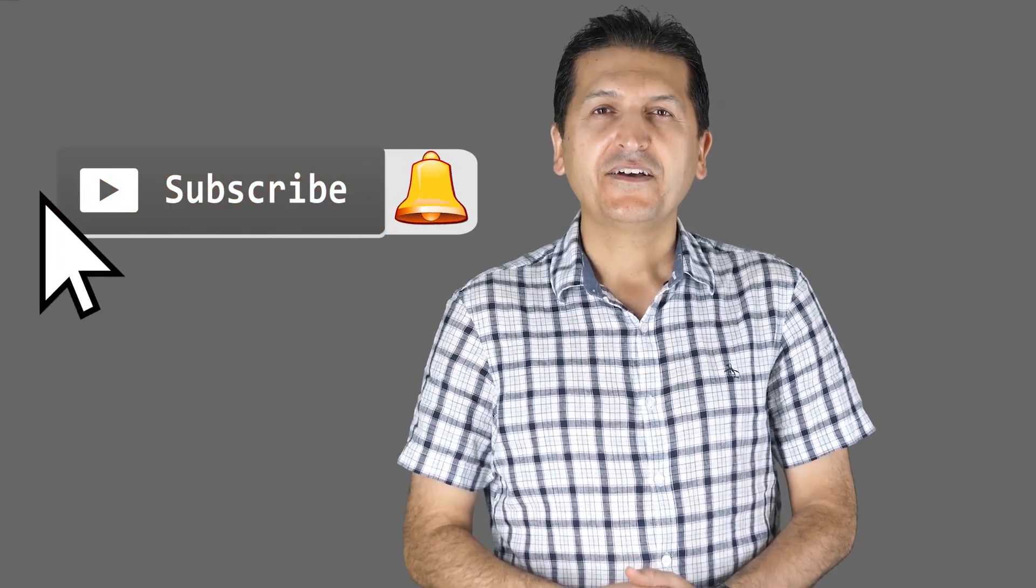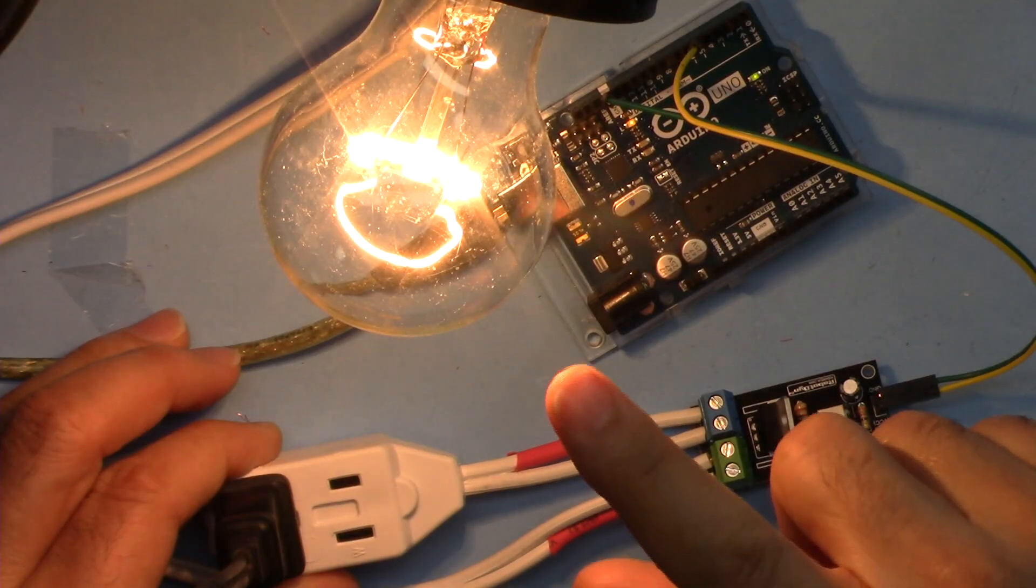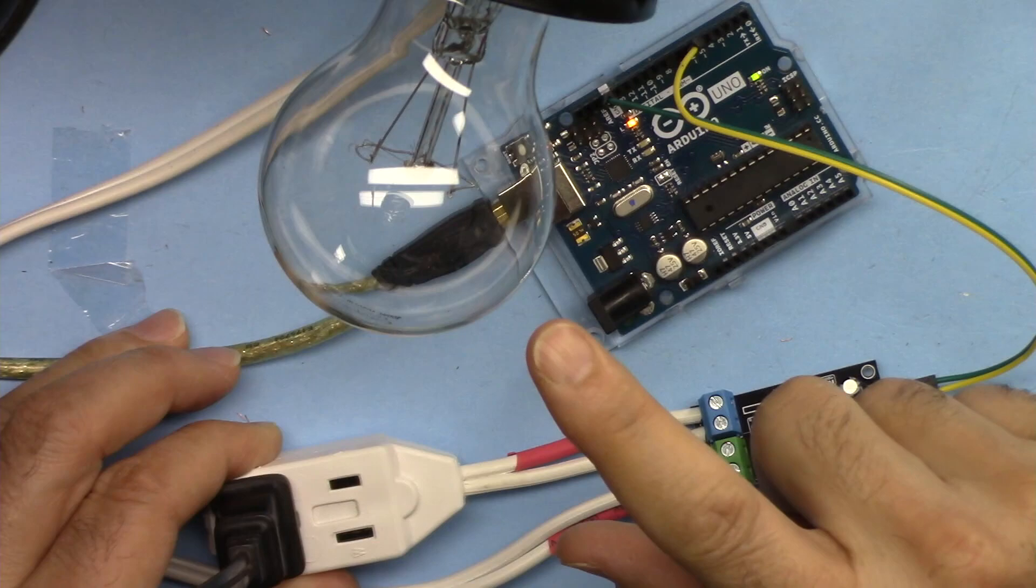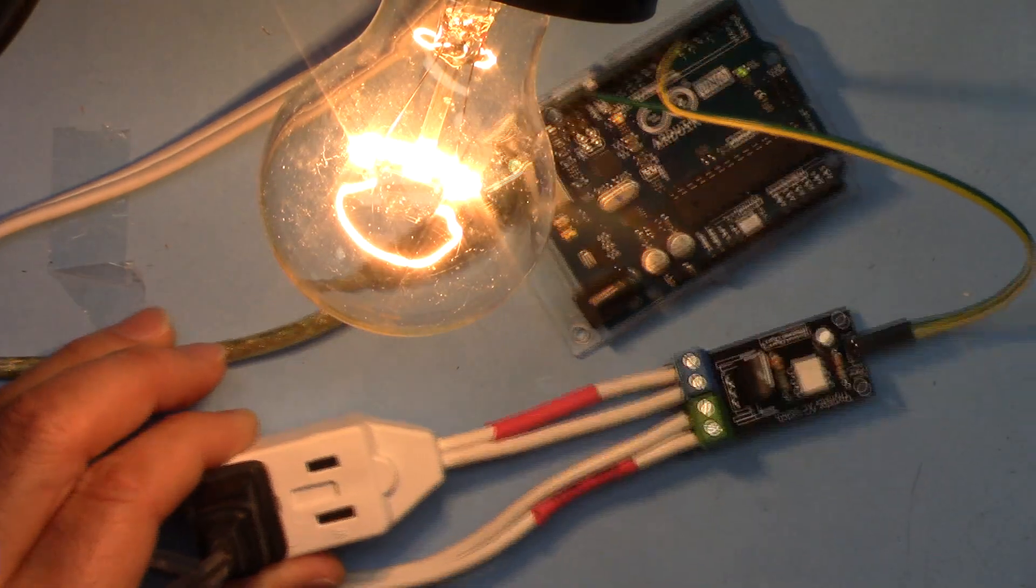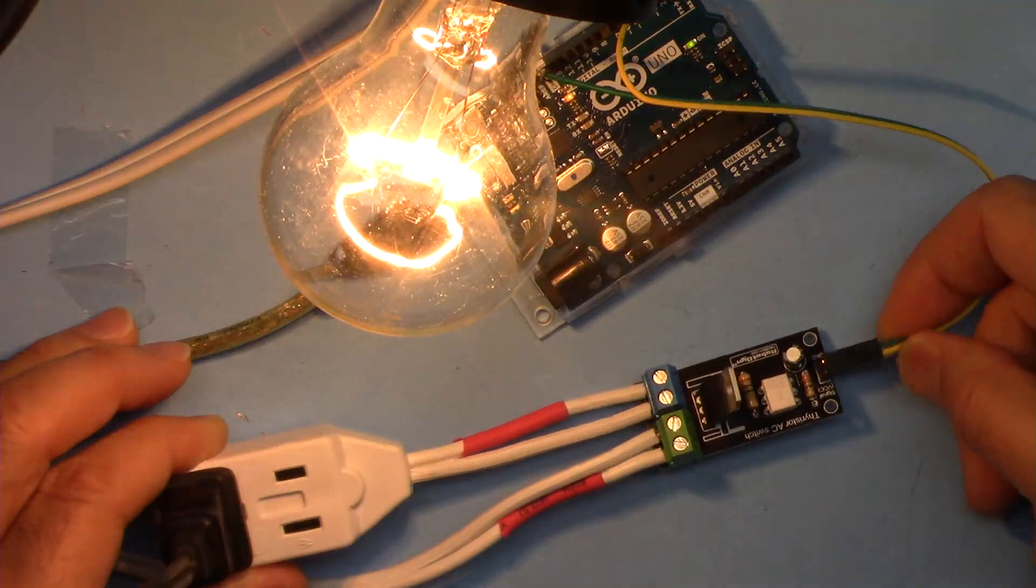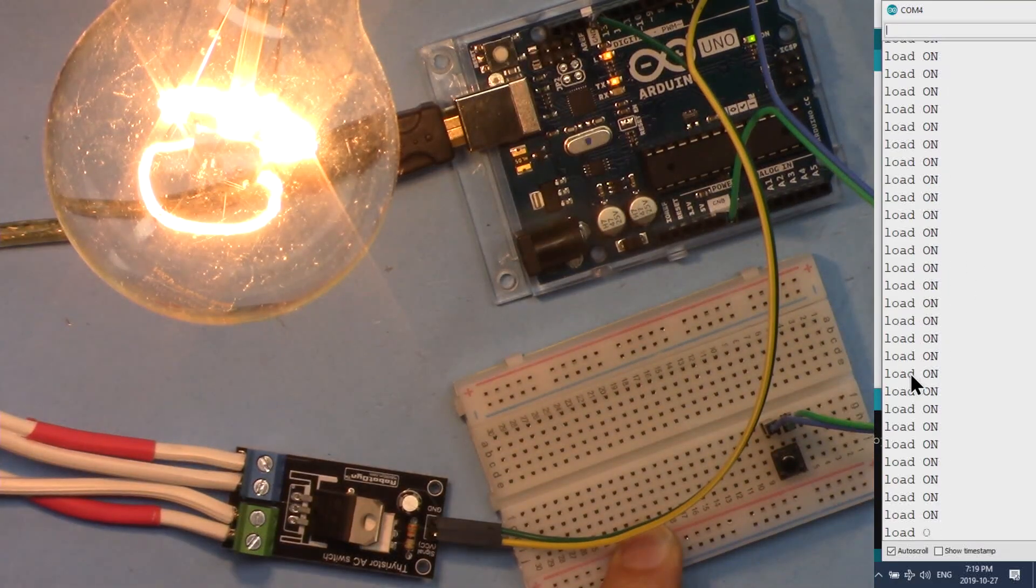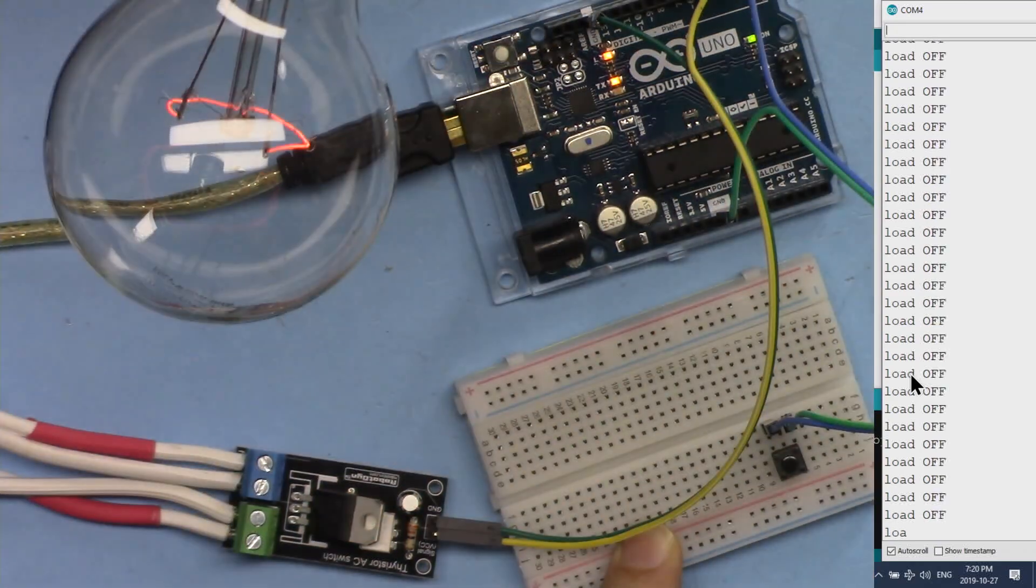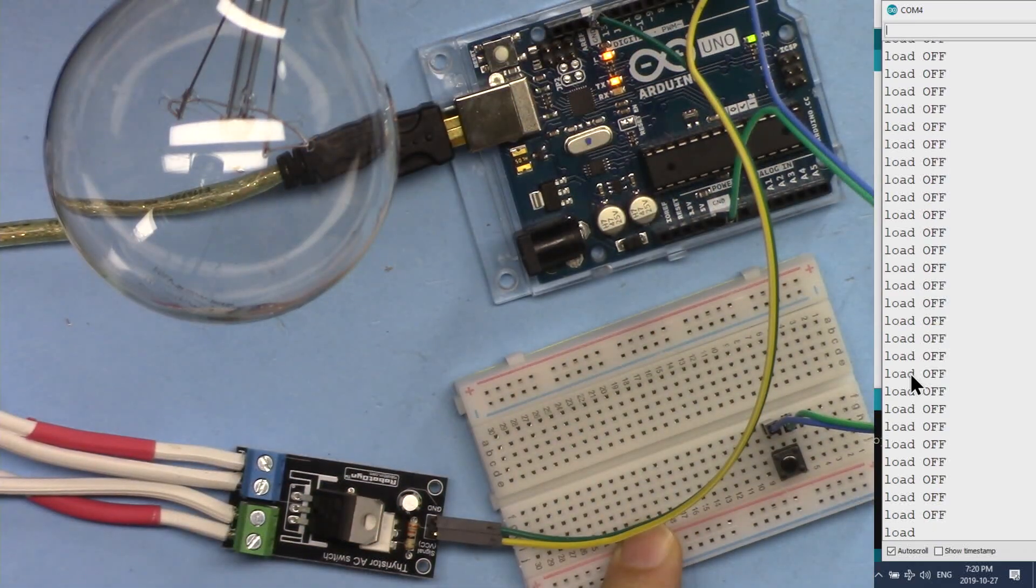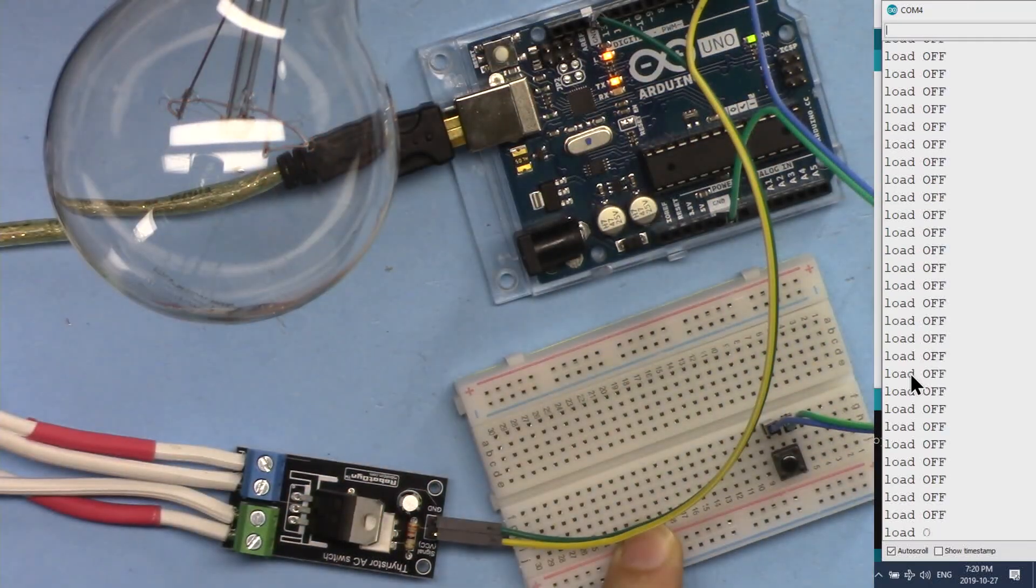If you want to get updates of my upcoming videos make sure to subscribe. A separate video explaining how to use this AC switch to control an AC load with Arduino without a push button via the signal. I have a separate video explaining how we can use this with a single push button and Arduino, so you push the button the load will be on and push the button the load will be off, so push on and push off.